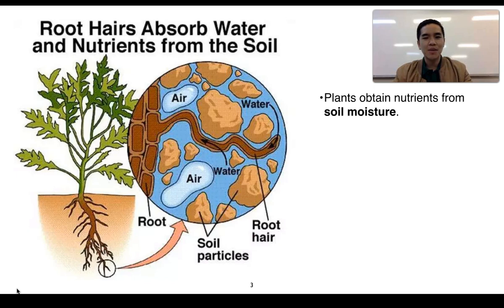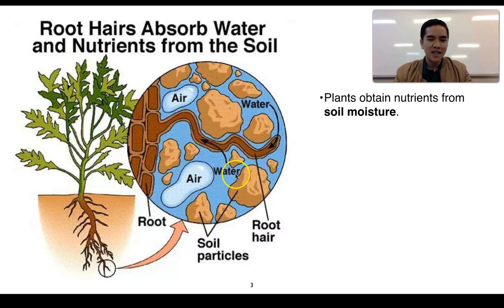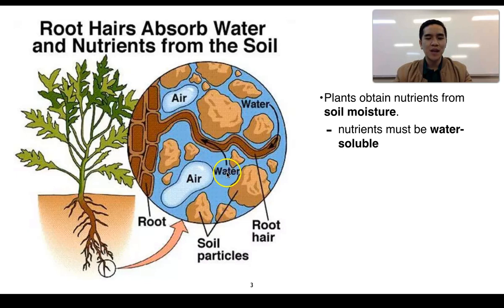The first important point to note is that plants obtain nutrients from the soil moisture. We can see a magnified view of some roots here, and these root hair cells which protrude out essentially take in nutrients through the water, which we call the soil moisture or the soil solution. In order for plants to obtain nutrients from this soil moisture or soil water, these nutrients must be water soluble.